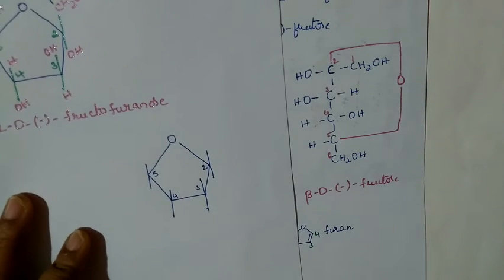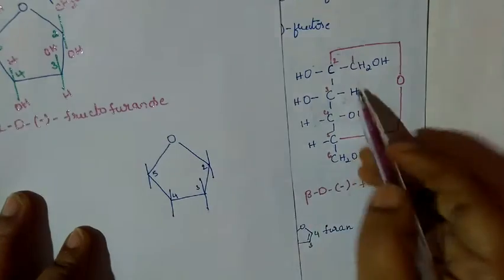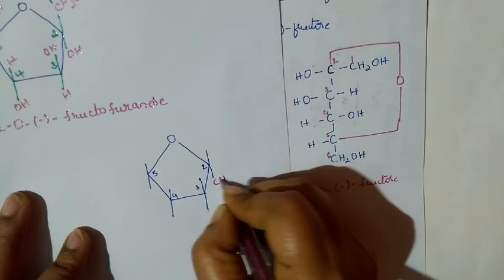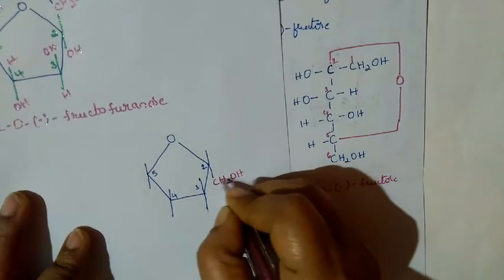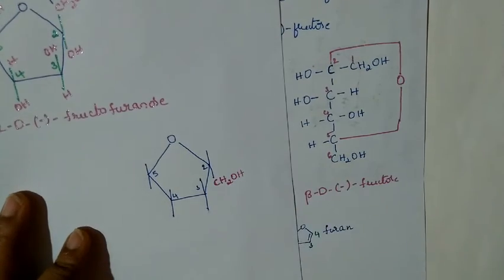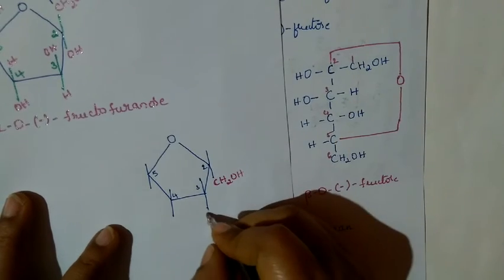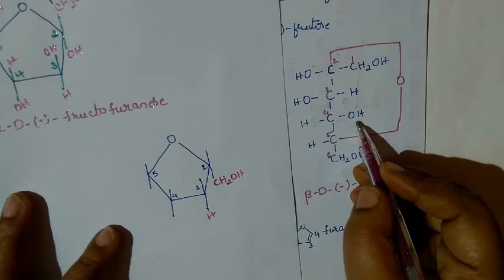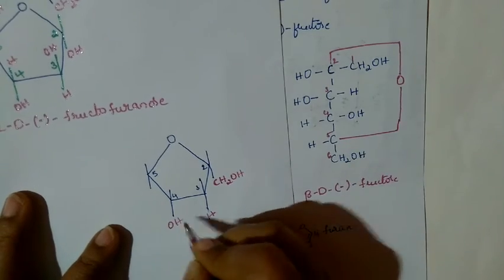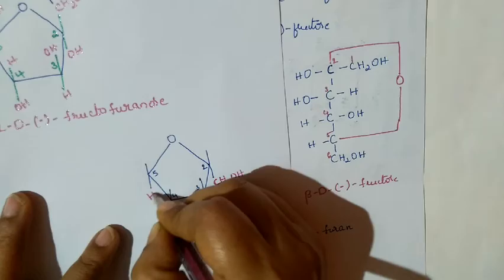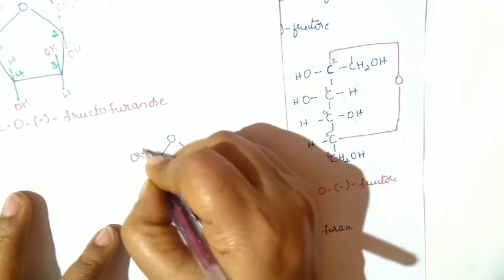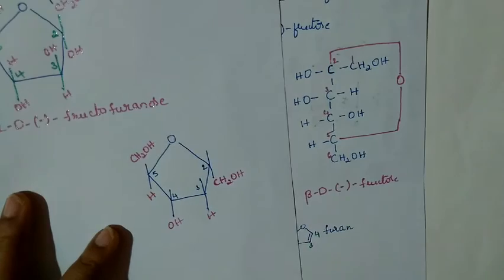Now we can compare the things. For the second carbon, CH₂OH is on the right side, so it will come in the bottom. For the third carbon, H is at the bottom because it is on the right side. For the fourth carbon, OH is at the bottom. For the fifth carbon, CH₂OH will always be above.